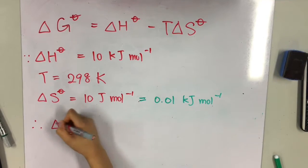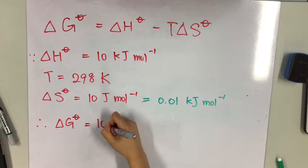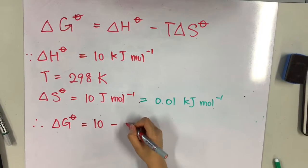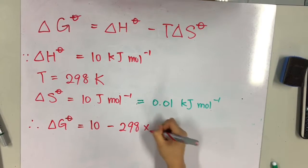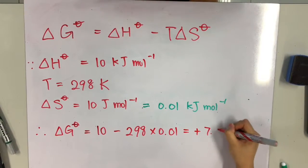Therefore, Gibbs free energy equals 10, which is the delta H, minus 298, which is the temperature, times 0.01, which gives us a positive value of 7.02 kilojoules per mole. Thank you.